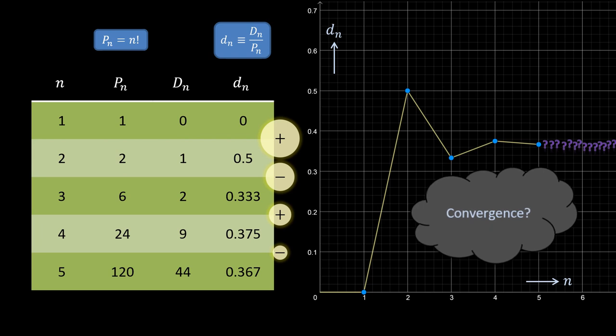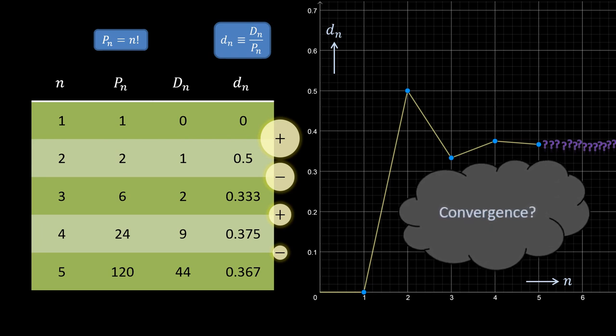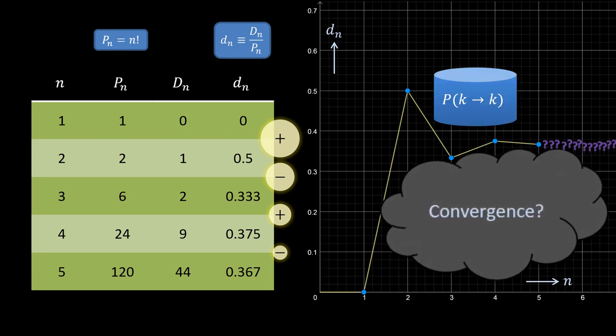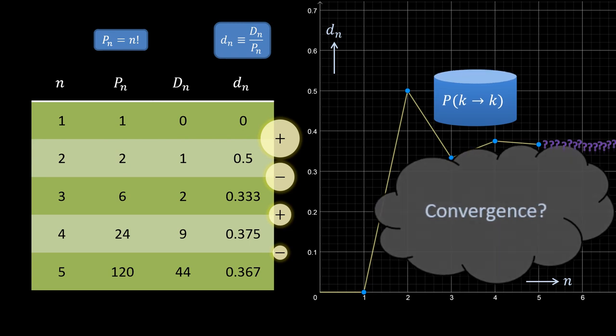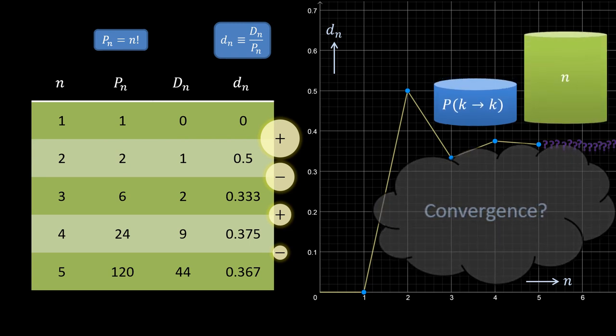But then again, maybe this shouldn't come as a huge surprise either, because the probability for a particular element to map to its original position decreases as the number of elements increases.